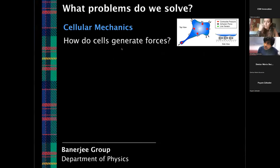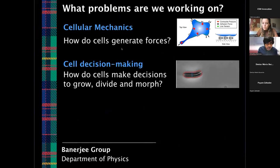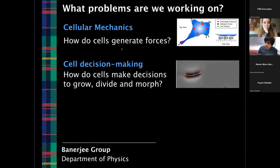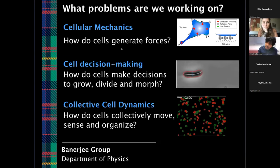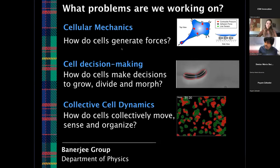The problems we really solve in our group: we try to understand mechanics — how things move, how things generate forces. We think of living cells as physical objects; to move they have to generate forces, and to change shapes they have to generate forces. But aside from mechanics, they also make decisions. They're intelligent objects — they make decisions to grow, divide, morph into different shapes, and adapt to different conditions. Part of our work is also to understand collective dynamics: how things collectively organize, move, and sense their environment.